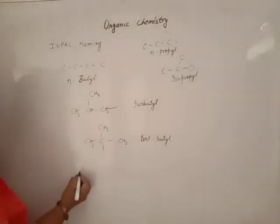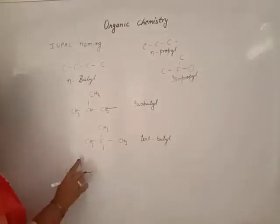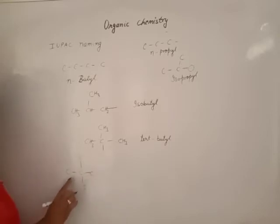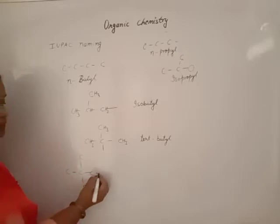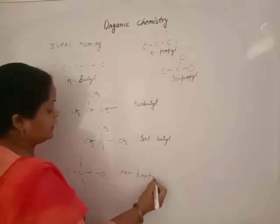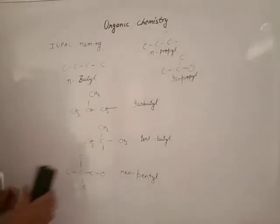If you have 5 carbons all surrounding a single central carbon, and the valence of any of these primary carbons is empty, it is known as neopentyl. Neopentyl is the common naming. You must learn this common naming.